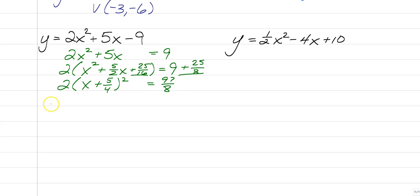Subtract him back over. We have y is equal to 2 times x plus 5 fourths squared minus 97 eighths. So we have a vertex of a negative 5 fourths comma negative 97 eighths. All right. So again, steps identical. The answer is just ugly because we have big nasty fractions. Like I said, your graphing calculator can handle them. So if you're not a big fan of the fractions, get your calculator.